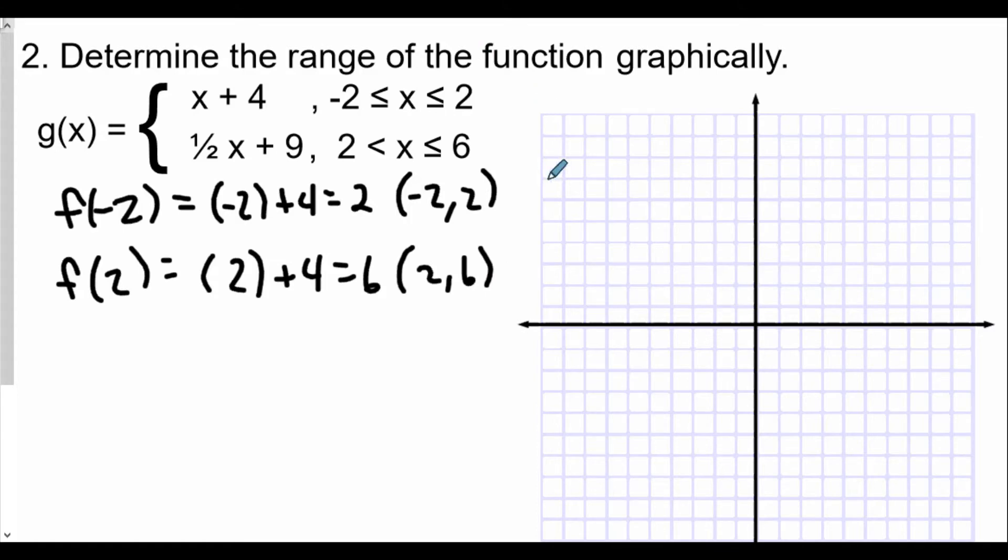Now we're going to graph this. X equals negative 2 on the x-axis, go left one, two, and up two. This will be our first point at (-2, 2). Our next coordinate for this function will be (2, 6), so we go from the origin to the right two and up six. From here we're going to connect these two points with a line segment, and this is what we get for the first part.